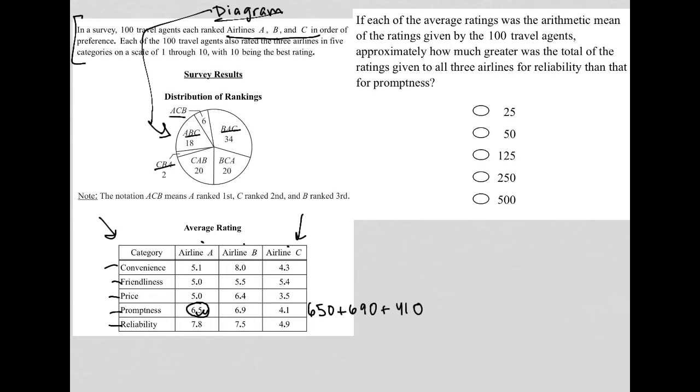And then the same for reliability. What we'd really have is 780 plus 750 plus 490. That would give us the total of all the reliability ratings across all three airlines.